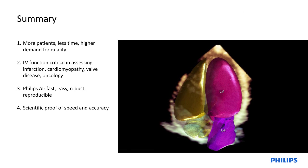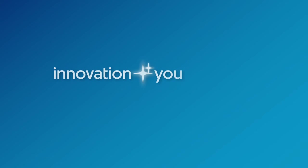To summarize: Heart Model is all about using the benefits of 3D quantification — but doing it with more patients in less time and satisfying the higher demand on quality. LV function is critical, as is LA function, in assessing ischemia, cardiomyopathy, valvular disease, and many conditions. Philips' anatomic intelligence technology and Heart Model in particular is fast, easy, and robustly reproducible — and scientific proof of accuracy has already been published with more coming. Innovation and you. Philips.